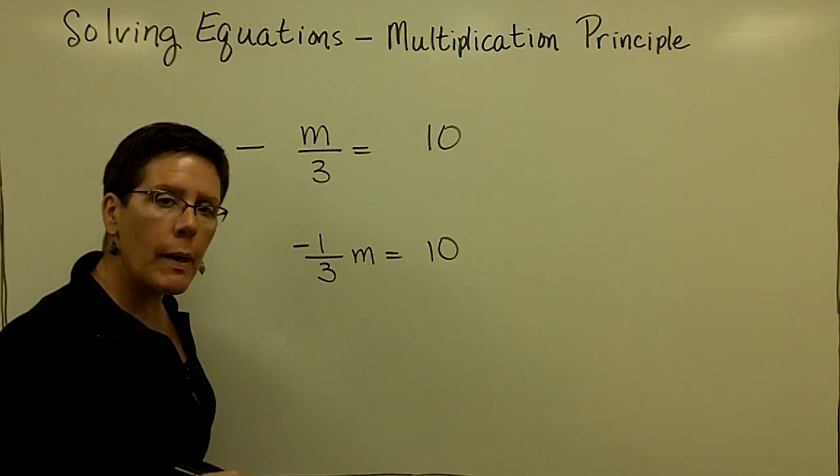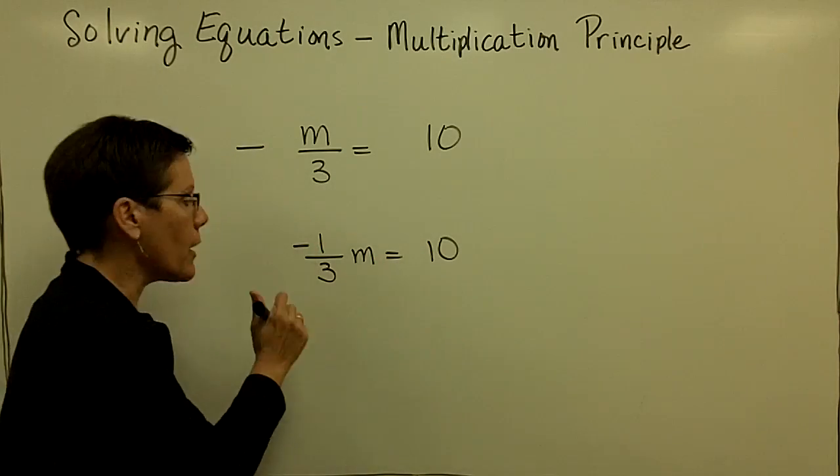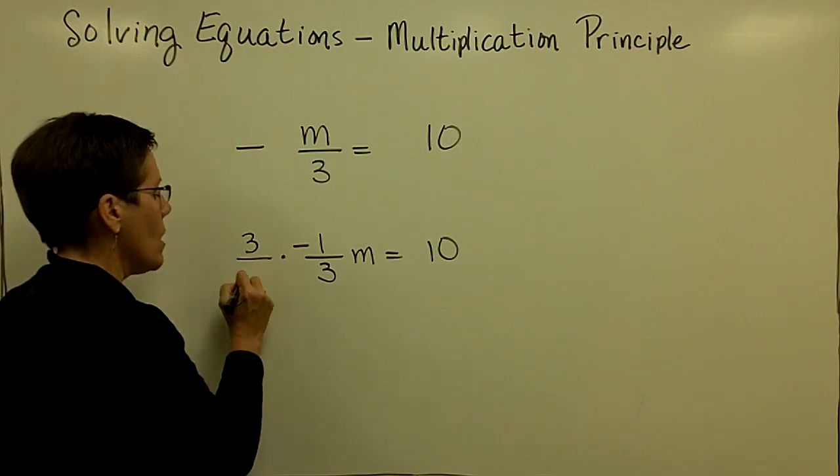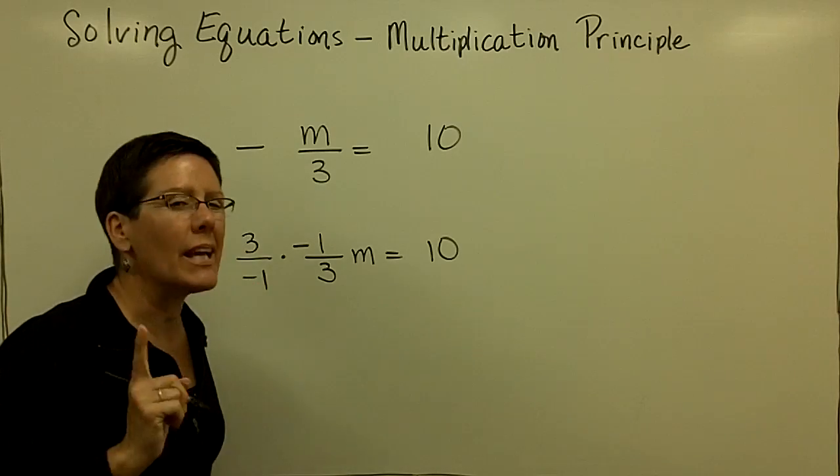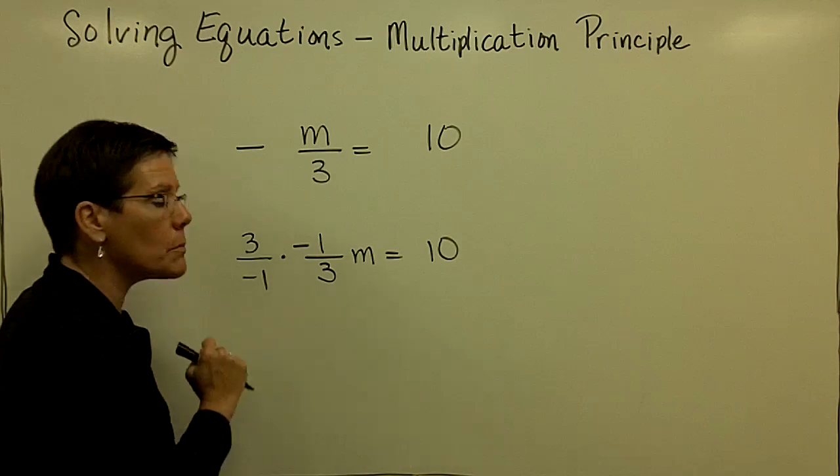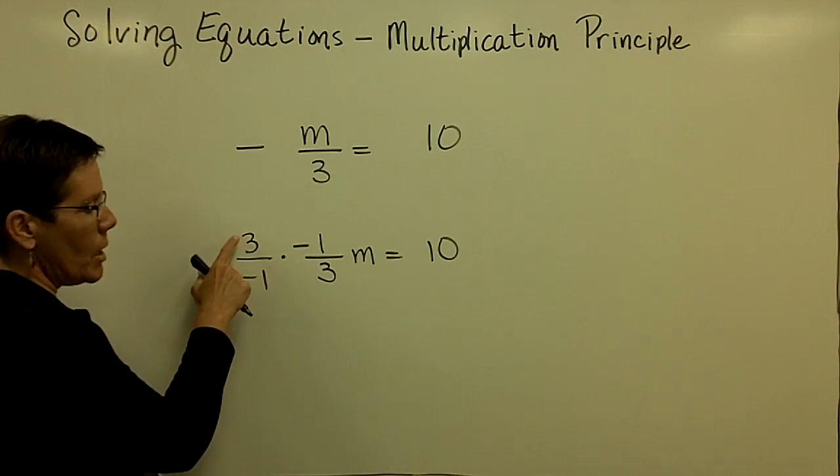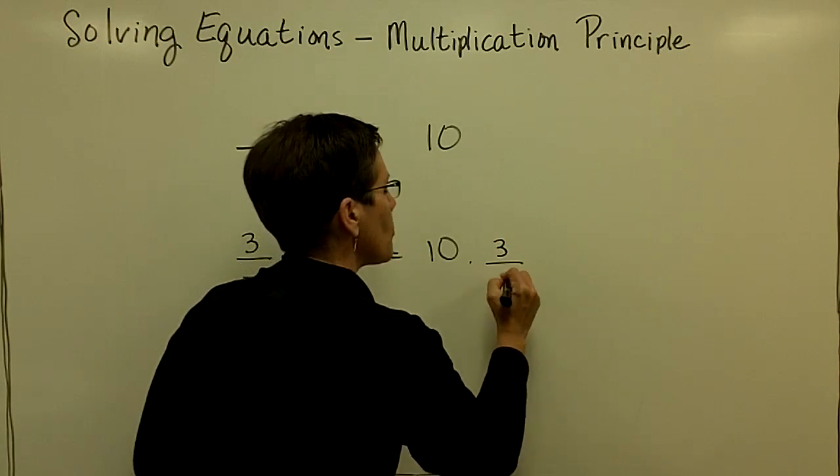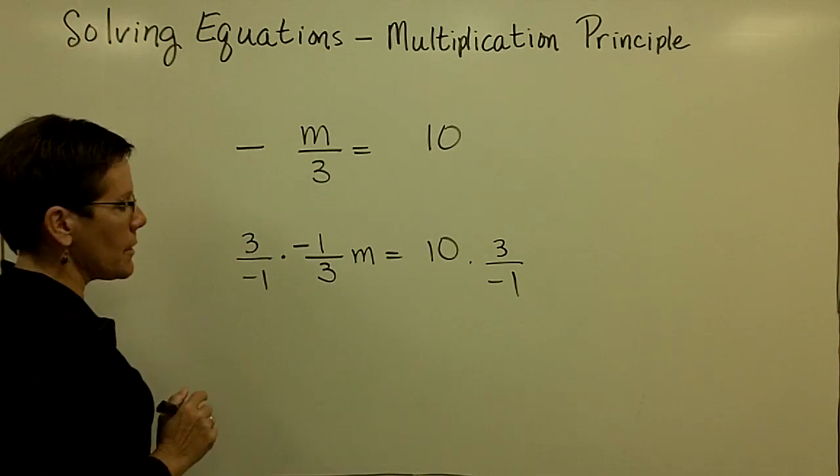So I'm going to write that as a negative 1 third times m equals 10. And I'm going to multiply by the reciprocal of this fraction. The reciprocal is sign and all. So I'm going to have a positive 3 over a negative 1. The sign could be anywhere really. But bottom line is this negative number times this negative number will be a positive. I am multiplying by a negative 3 here.